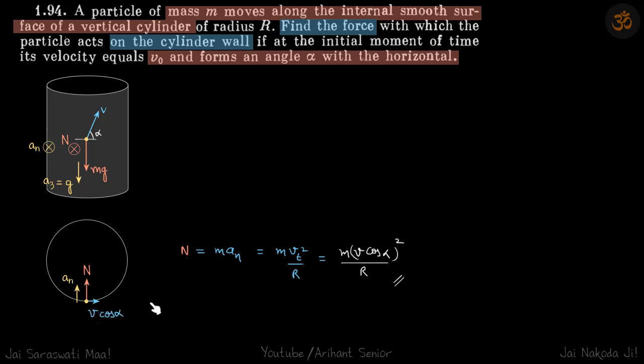...that is v² by R. So it is ma_n equals m into v cos α square by R, which is m v² cos² α / R. This is our answer, the normal reaction.